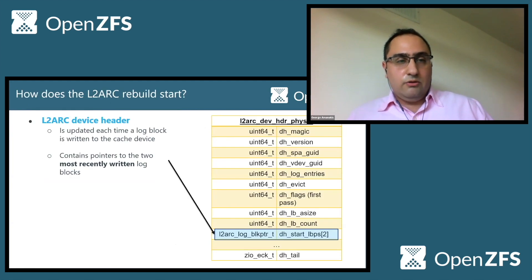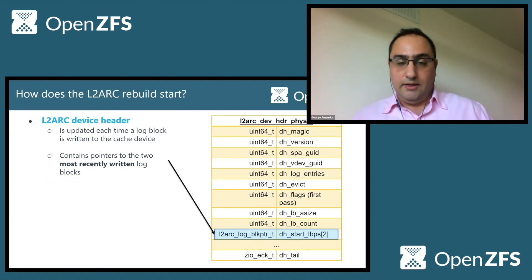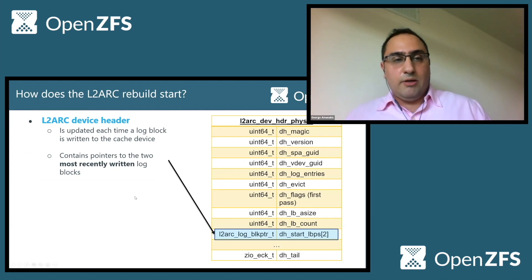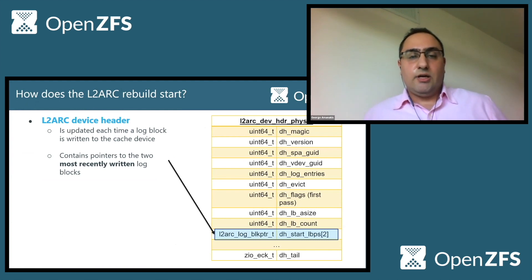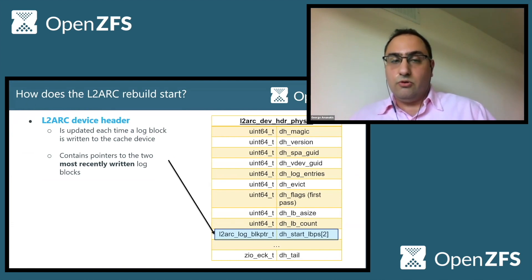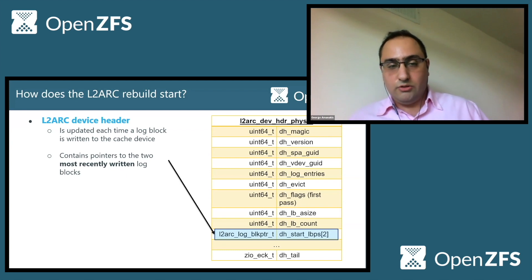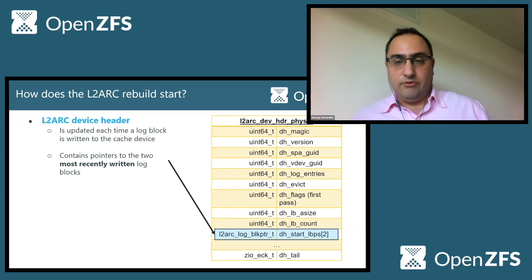Now that we know all this, the question was: how do we actually start the L2ARC rebuild? To do this, we implemented another on-device structure — the device header. This is updated each time a log block is written to the cache device, and it contains pointers to the two most recently written log blocks. That's how we know which two log blocks were last written on the device in order to start the rebuild.